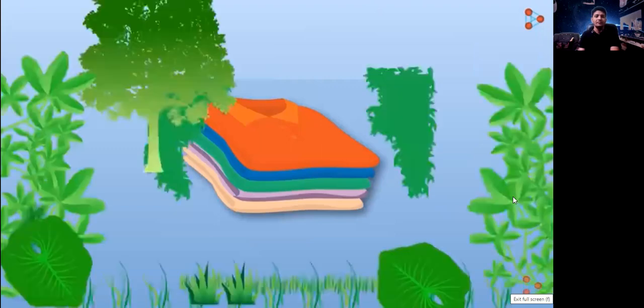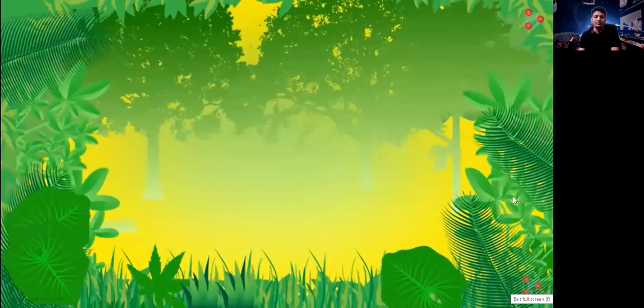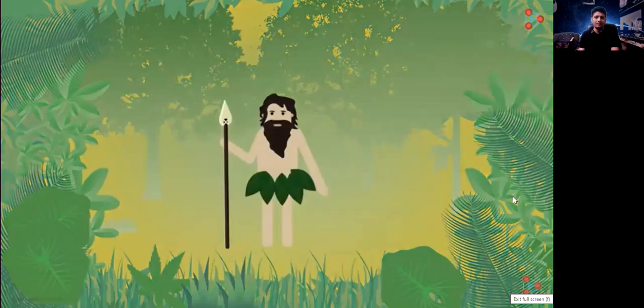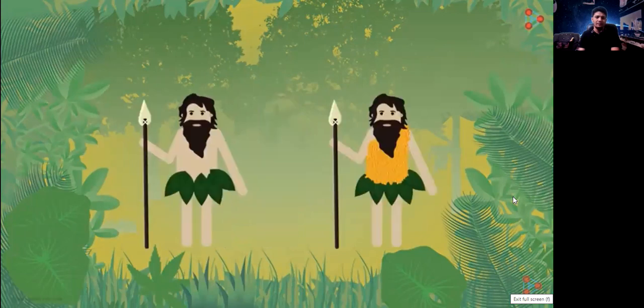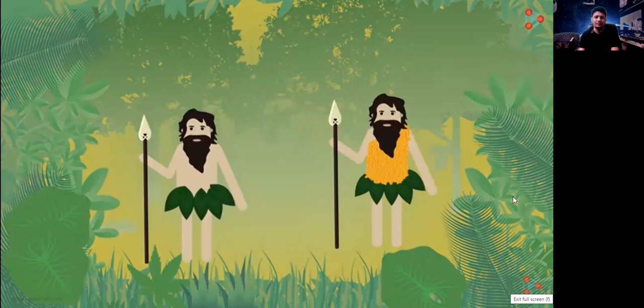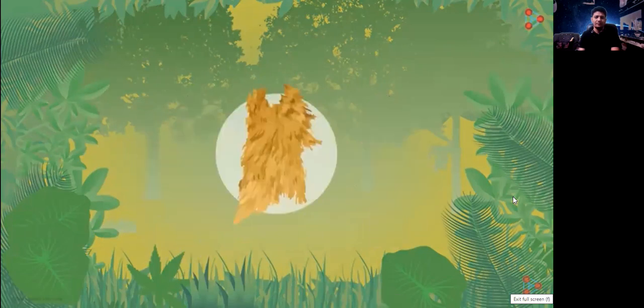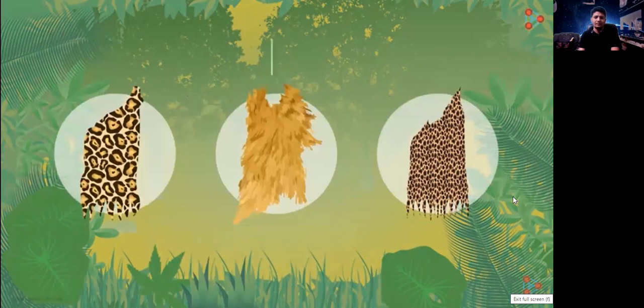Since the prehistoric era, there has been a drastic change in the clothes that humans wear. Early man used only the large leaves of trees to cover the body. With time, it was seen that even animal skin can be used as a cover for the body. Soon, animal fur, fleece and skin were employed as clothes.